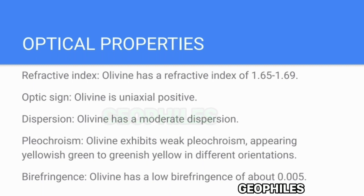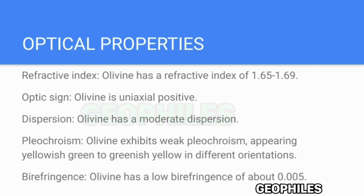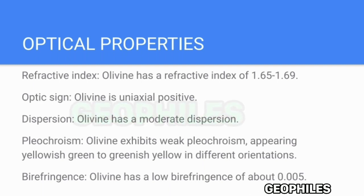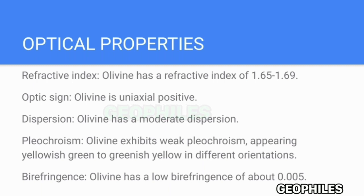Optic Sign: Olivine is uniaxial positive. Dispersion: Olivine has a moderate dispersion. Pleochroism: Olivine exhibits weak pleochroism, appearing yellowish-green to greenish-yellow in different orientations. Birefringence: Olivine has a low birefringence of about 0.005.